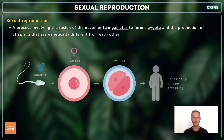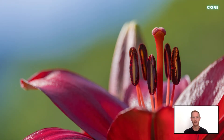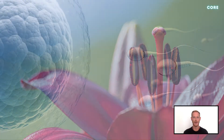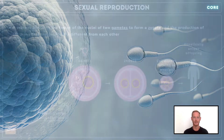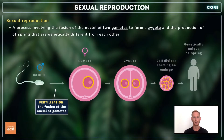Gametes are sex cells. In flowering plants, male gametes are present in pollen grains, and female egg cells in ovules. In animals, sperm are produced in the testes, and eggs in the ovaries. In sexual reproduction, the male and female gametes come together, and their nuclei and cytoplasm fuse to form a single cell called a zygote. This is known as fertilization.